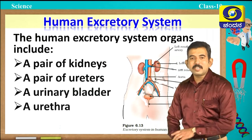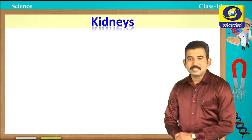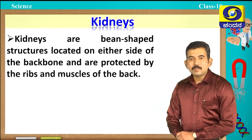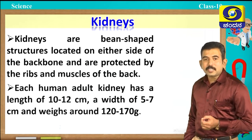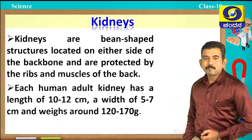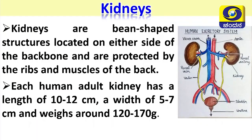These are the important organs of our excretory system. The main organ is the kidneys — we possess a pair of kidneys which are bean-shaped, located on either side of the backbone and protected by the ribs and muscles of the back. Each adult kidney is 10 to 12 cm long and 5 to 7 cm wide, weighing around 120 to 170 grams. In the picture you can also observe the pair of ureters, urinary bladder, and urethra.